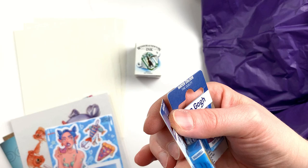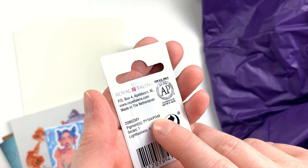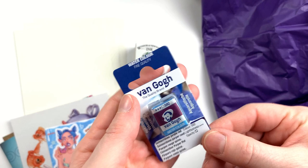Then we have two half pans of Van Gogh watercolor paint. I got a pan of gamboge and one of quinacridone purple red. The gamboge is a mix of pigments PY154 and PO48. The quinacridone purple is PV55.